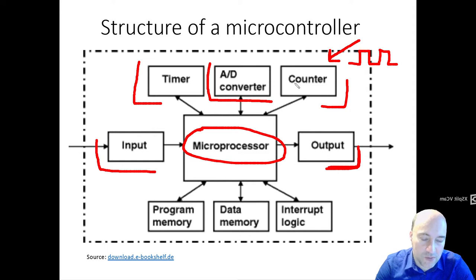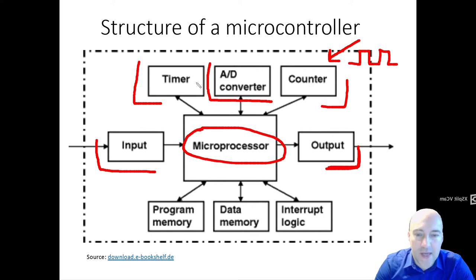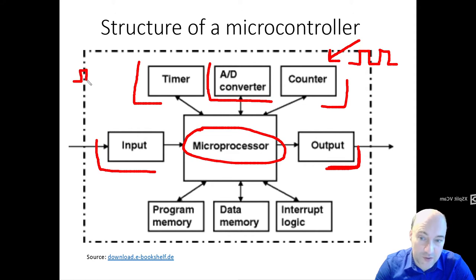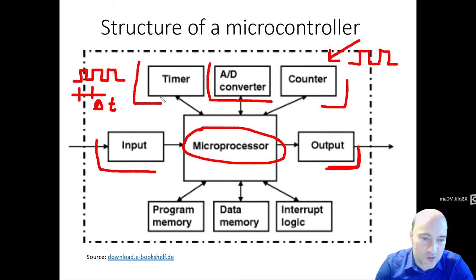What is the difference between a timer and a counter? A counter counts external events, such as info from a sensor or button presses. A timer is also a counter, but the signal it counts comes from an internal oscillator — a circuit that runs automatically and provides a square wave signal with a known frequency. Since you know the period delta_t, by counting the number of pulses you can use this as a timer to count time.